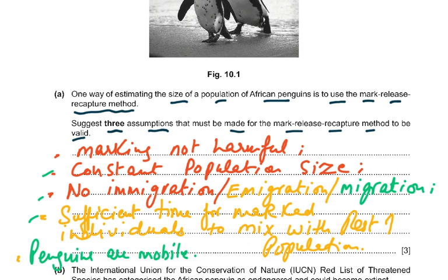So we are assuming all these things. The mark-release-recapture method requires three valid assumptions. You have to mark them, release them, recapture them, count them, and then use the formula to calculate the population size.